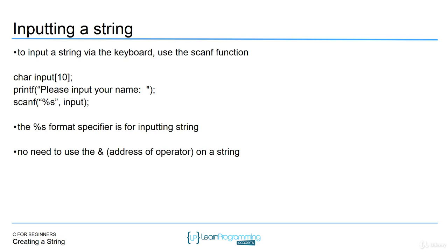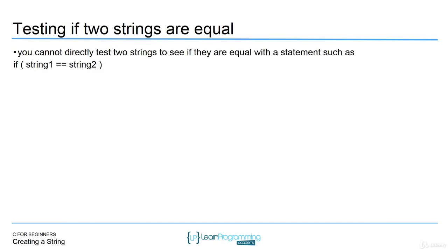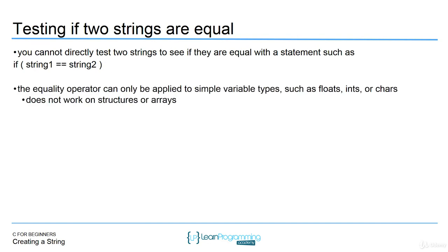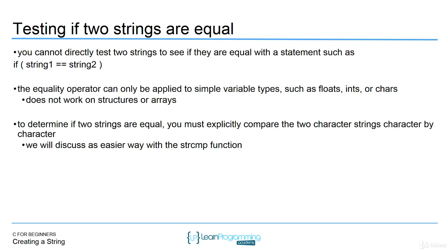How about testing if two strings are equal? Up until this point we've tested variables for equality using the equals-equals operator, but with strings this is not going to work. The equality operator can only be applied to ints, doubles, floats, or characters — it does not work on structures or arrays, so it's not going to work with strings. If you want to determine if two strings are equal, you have to explicitly compare the two character strings character by character, looking at each element index by index. That would be really tedious, so we're going to talk about how you can do it very easily using the strcmp function from the standard library. But you cannot use equals-equals — remember that.